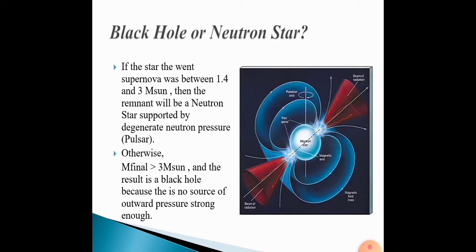Black hole or neutron star? If the star that went supernova was between 1.4 and 3 solar masses, then the remnant will be a neutron star supported by degenerate neutron pressure. Otherwise, mass final is greater than 3 solar masses, and the result is a black hole because there is no source of outward pressure strong enough.